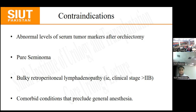Additional contraindications include bulky retroperitoneal lymphadenopathy at stage 2B — that is, involvement of stage 2 or 3 lymph nodes — and comorbid conditions that preclude general anaesthesia. If the patient is unfit for general anaesthesia, it is a contraindication for RPLND, because the operation takes a long time and can endanger the patient's life.